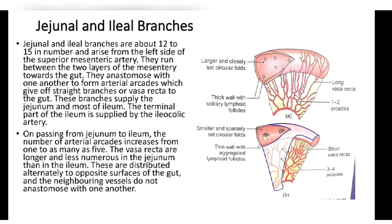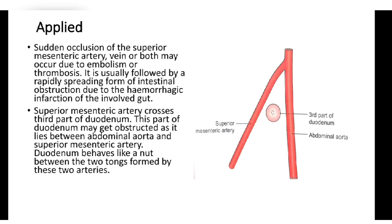On passing from jejunum to ileum, the number of arterial arcades increases from 1 to 2 in the jejunum up to as many as 5 in the ileum. The vasa recta are longer and less numerous in the jejunum than in the ileum. These are distributed alternately to opposite surfaces of the gut, and neighboring vessels do not anastomose with one another.